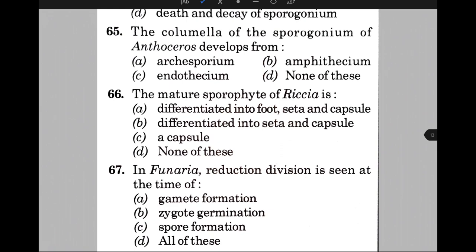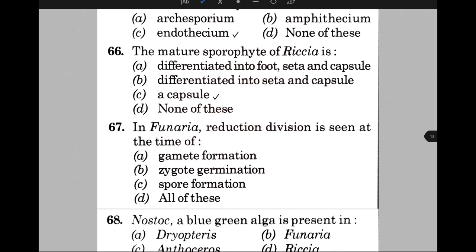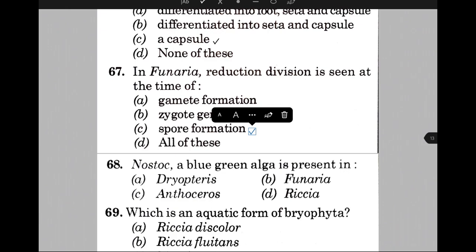The mature sporophyte of Riccia is — the answer is C, that is a capsule. In Funaria, reduction division occurs at the time of — the answer is C, that is spore formation. Nostoc, a blue-green alga, is present in — the answer is C, that is Anthoceros.